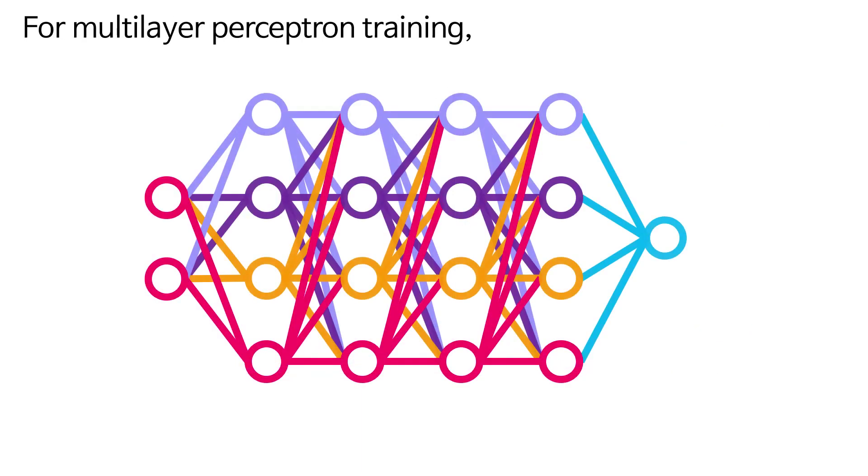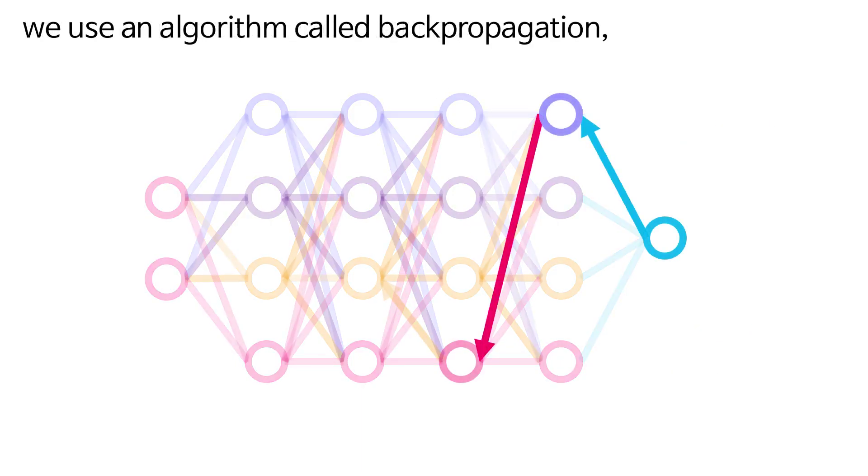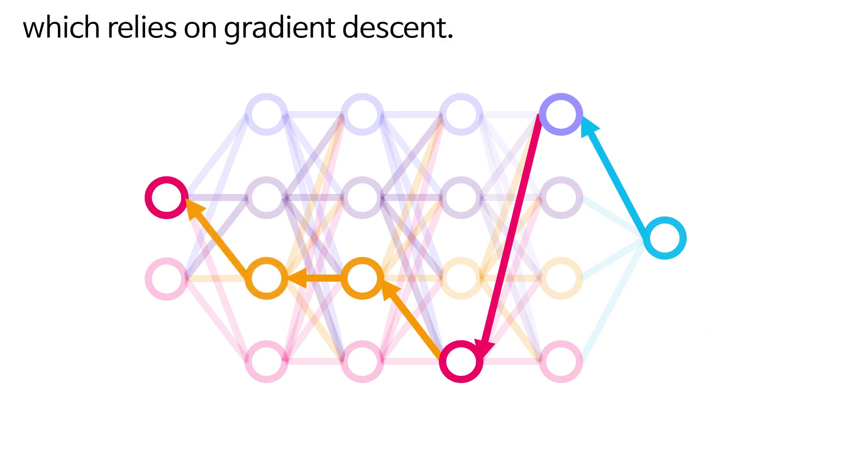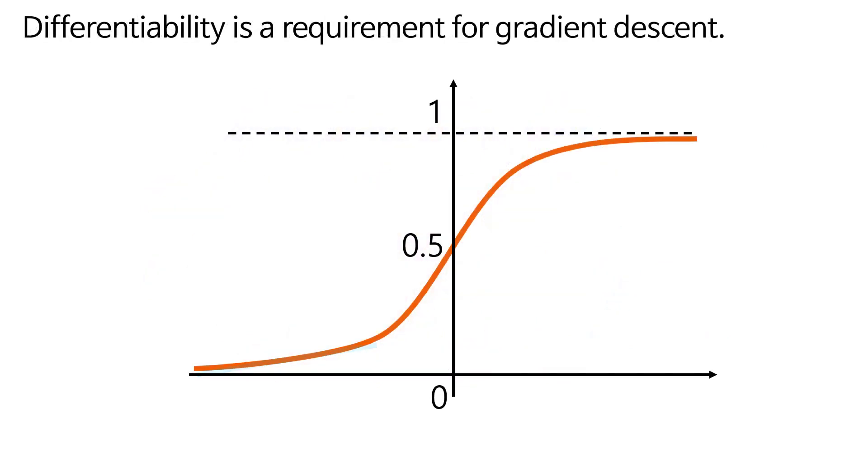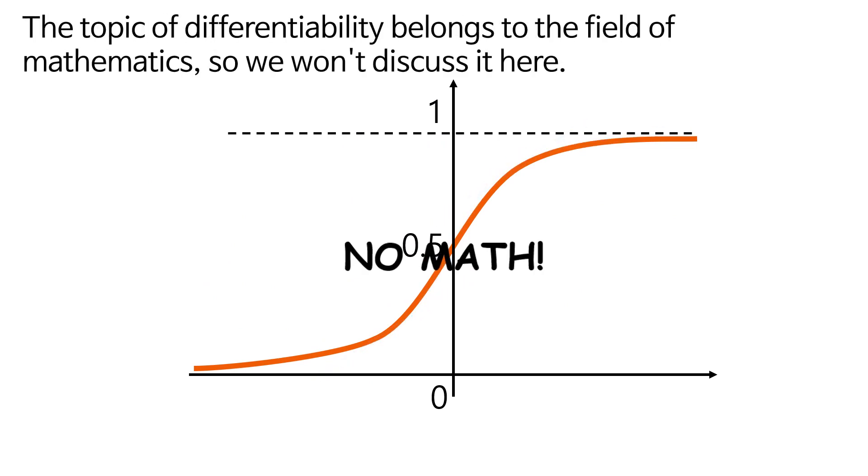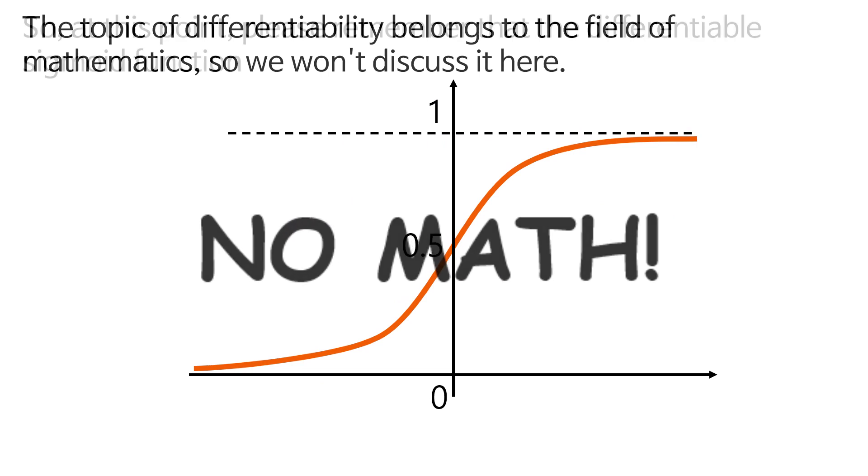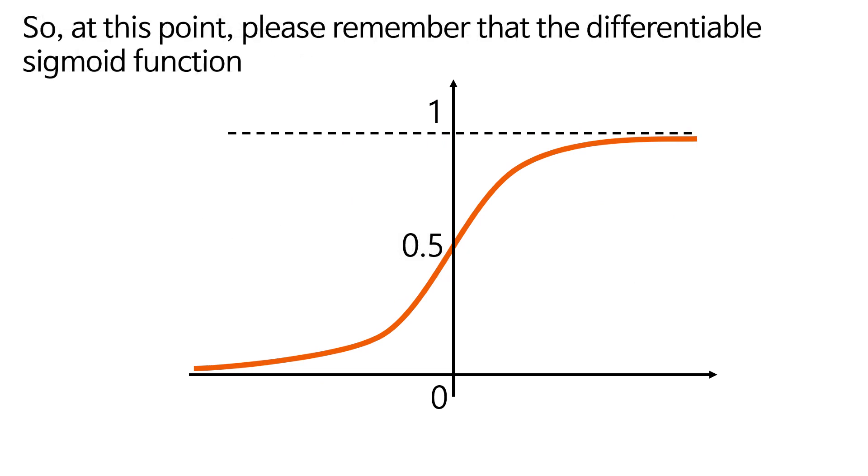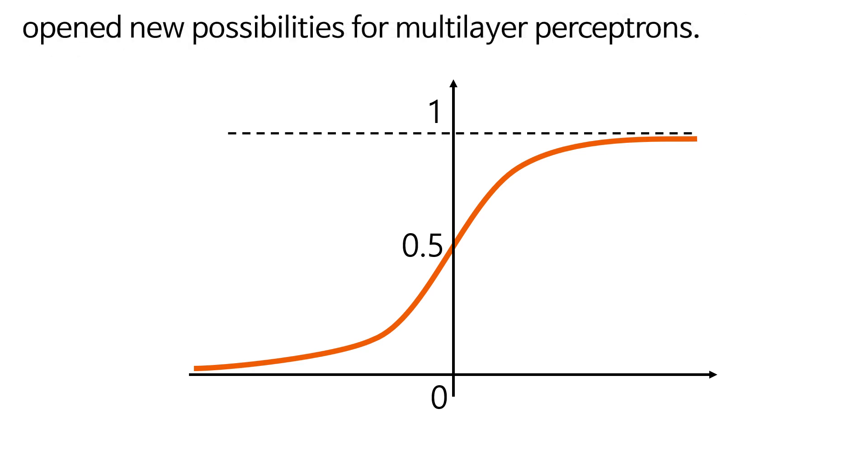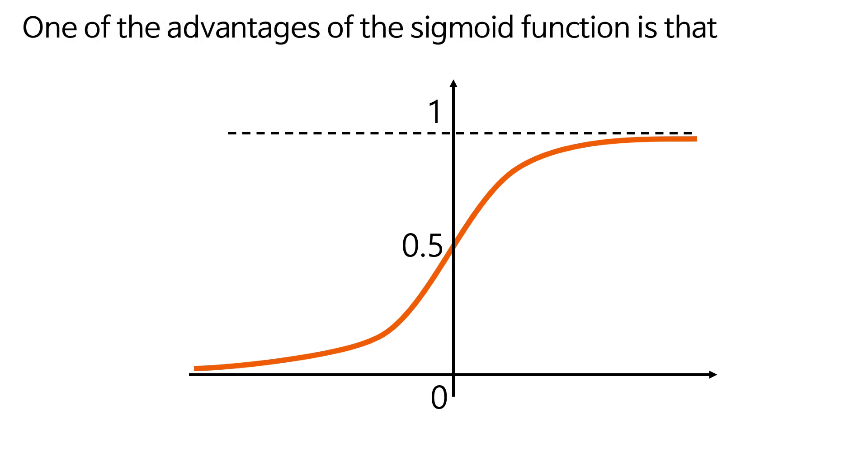For multilayer perceptron training, we use an algorithm called backpropagation, which relies on gradient descent. Differentiability is a requirement for gradient descent. The topic of differentiability belongs to the field of mathematics, so we won't discuss it here. So at this point, please remember that the differentiable sigmoid function opened new possibilities for multilayer perceptrons.